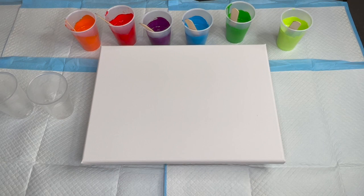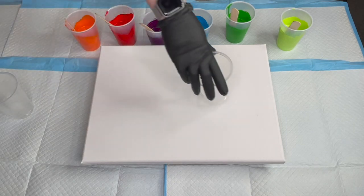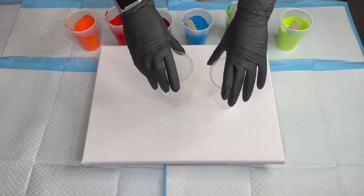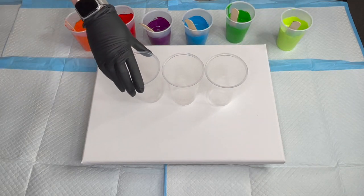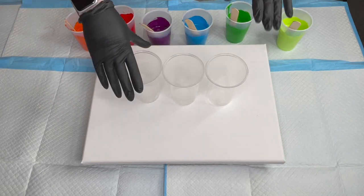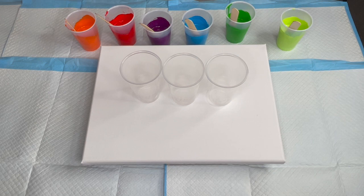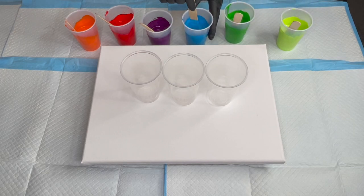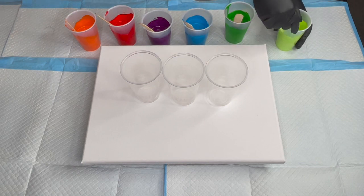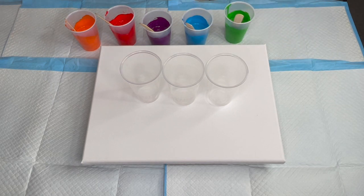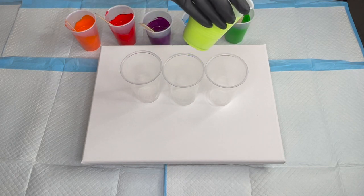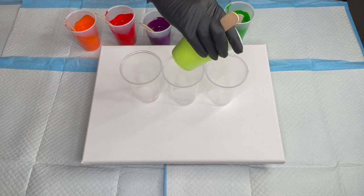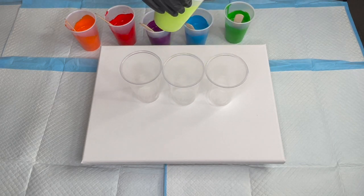They'll either look really good or really bad. We're going to find out soon enough. I've got a 12 by 16 inch canvas. I've got about a hundred grams of paint and pouring medium in each cup. I've added three drops of silicone, treadmill silicone, to each cup as well, and we're just gonna do two layers.